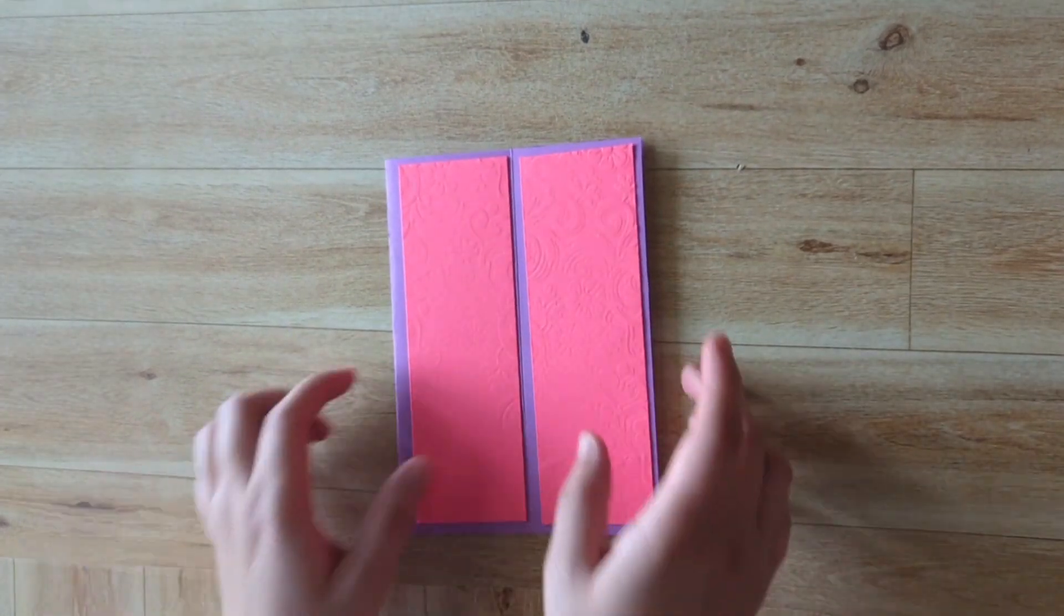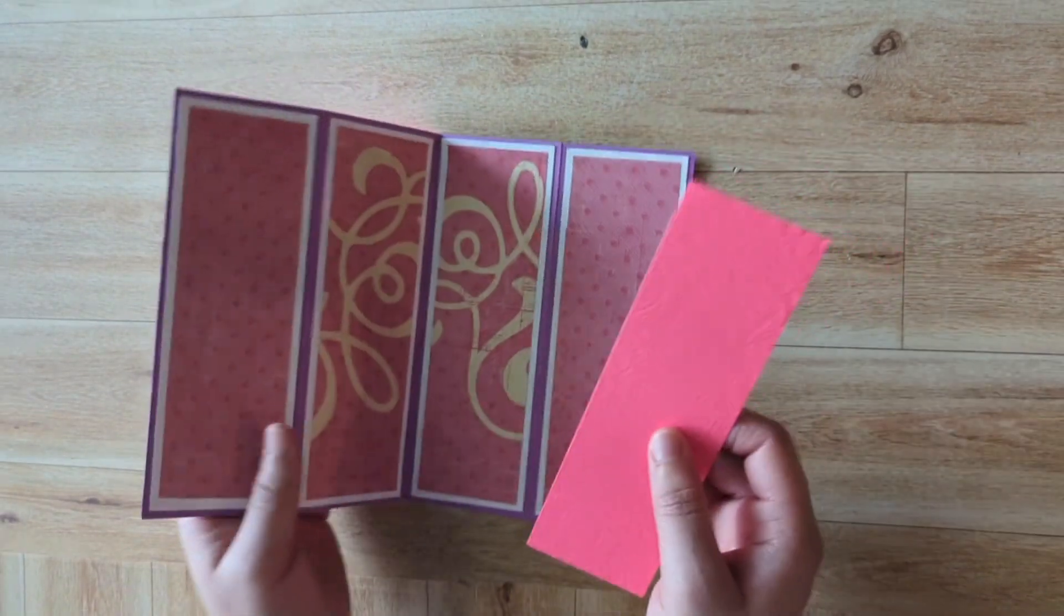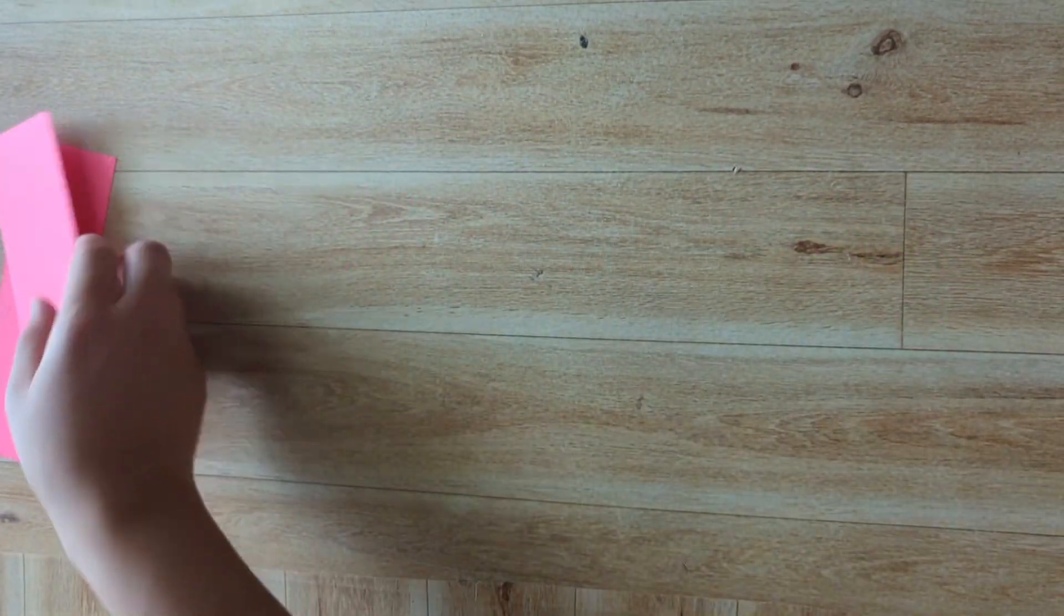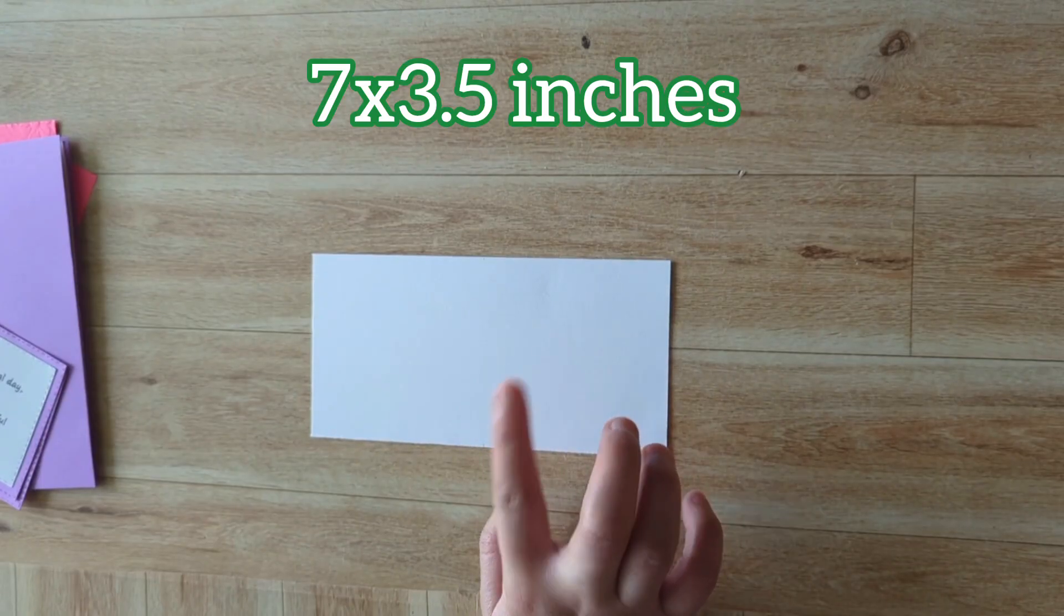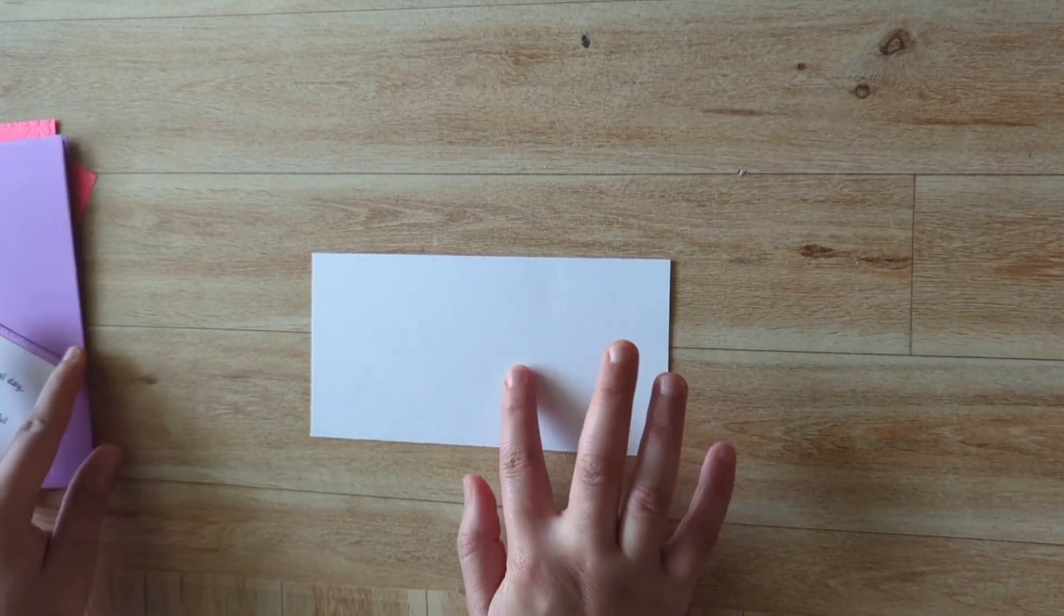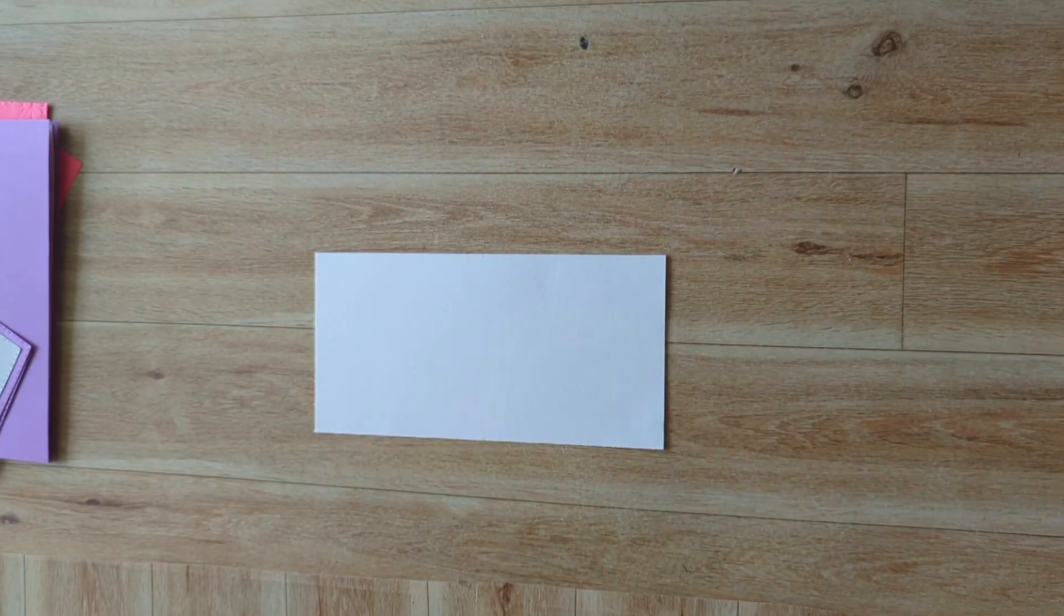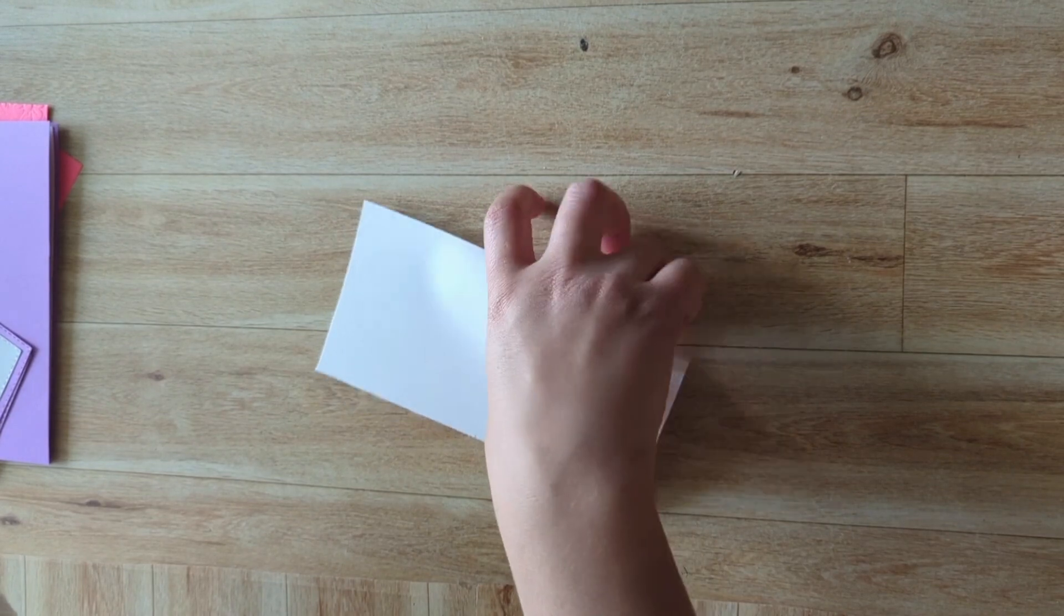Okay, so now that I'm going to go there, let's focus more on the middle portion. So I have this piece of cardstock and it measures 7 by 3.5, and I'm going to score the 7-inch side at 3.5 inches.